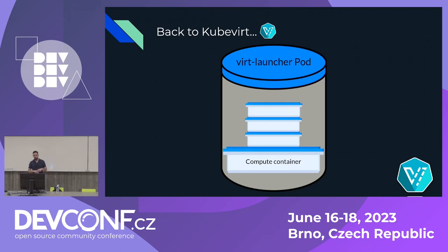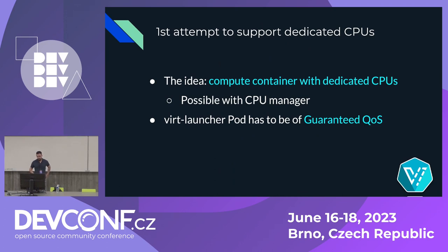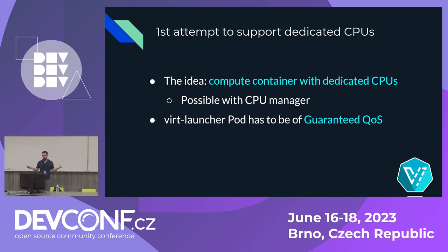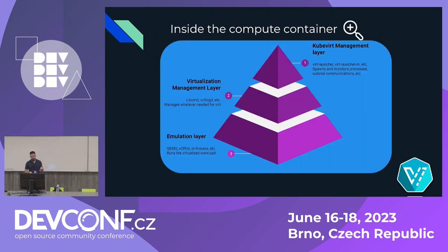Going back to KubeVirt architecture: when we say we run a VM inside a container, we have the virt-launcher pod which actually runs the guest. Inside we have different containers, but the main one is called the compute container. Now, for the first attempt to support dedicated CPUs: we can simply allocate dedicated CPUs to that container. It's possible with CPU Manager — we need it to be guaranteed, with requests and limits equal to an integer. But it's not that simple.